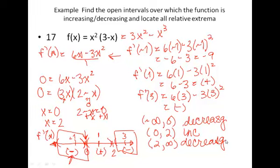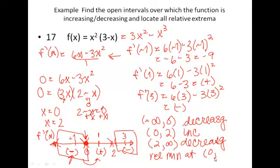The last part is to locate all relative extrema. The only places for those relative extrema to occur are at the critical points. By looking at the sign line, when approaching the critical value of x equals 0, the function was decreasing and then switched at zero to start increasing — so that would be a relative minimum. I need to go back to the original equation to find the y value: f of 0 equals 0 squared times three minus 0, which is zero. So we have a relative minimum at (0, 0).